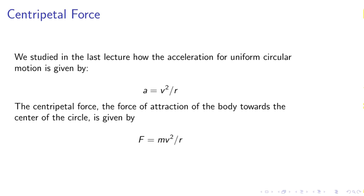Centripetal force. We studied in the last lecture how acceleration for uniform circular motion is given by A equals V squared over R. The centripetal force, the force of attraction of the body towards the center of the circle, is given by F equals m V squared over R.